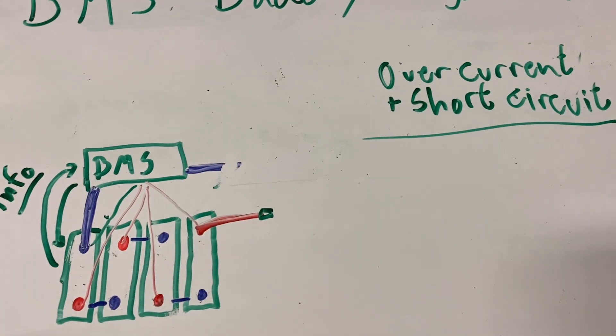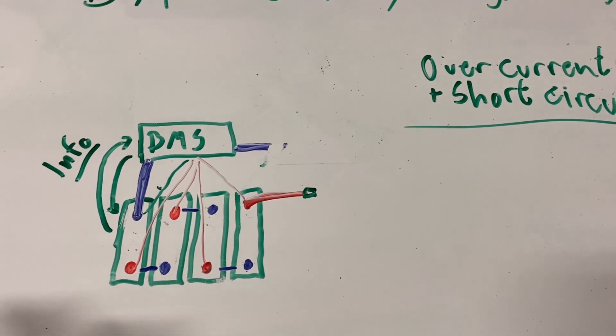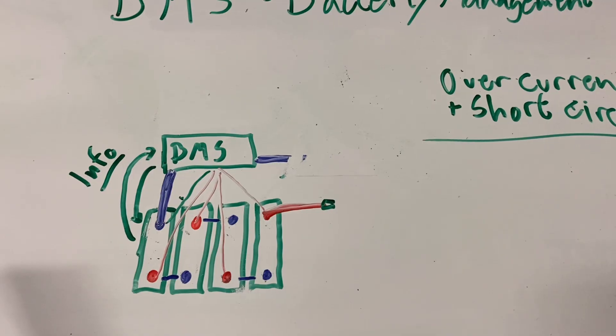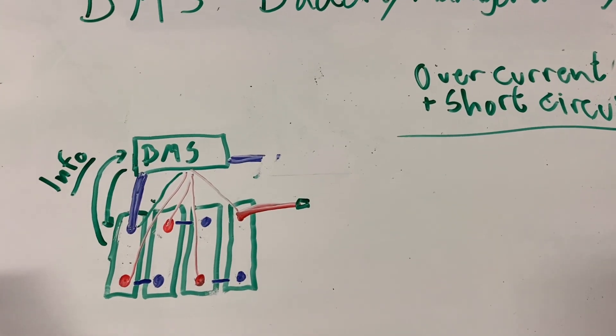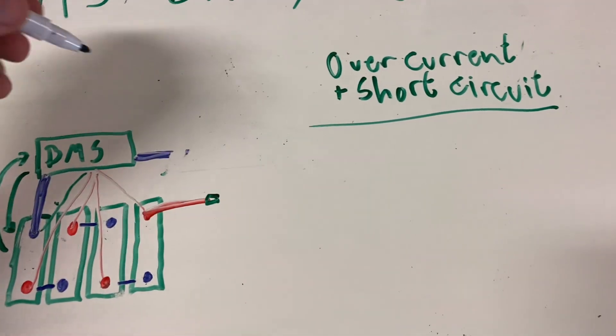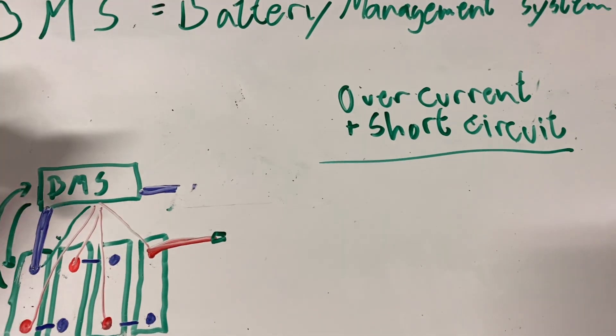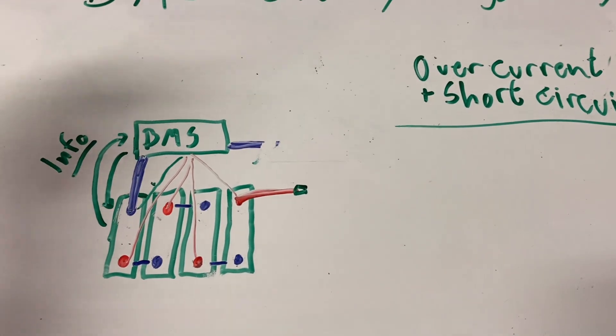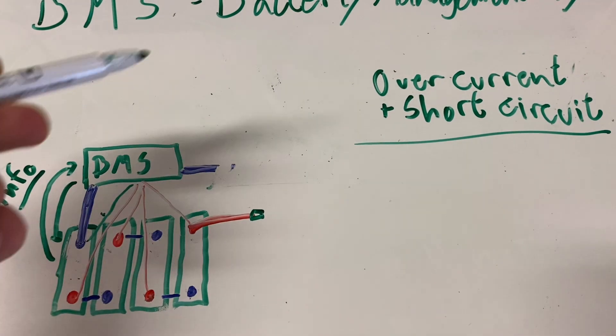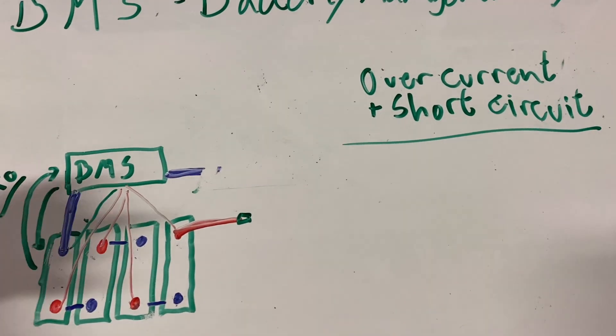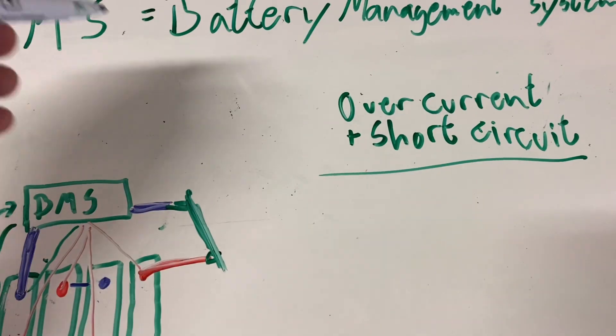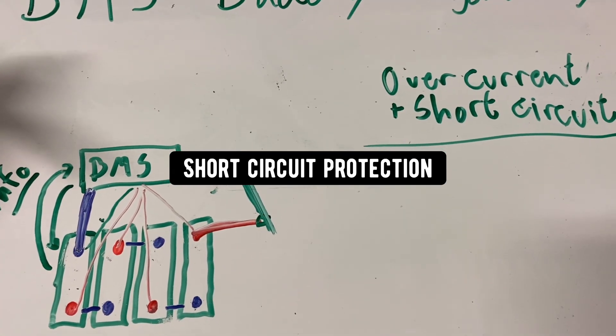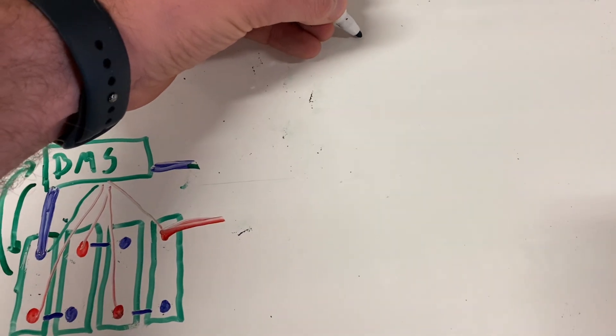If the overcurrent protection were to kick in, the BMS will most likely fix itself over time. But with cheaper BMSs with low tolerance, it could lead to a dead battery and you will have to swap out your BMS. So in a short circuit situation where you somehow short out your battery, it's the overcurrent protection kicking in.